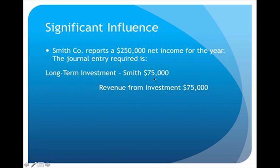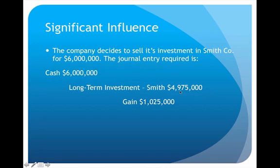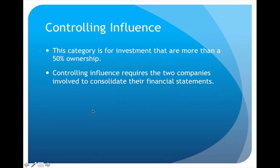Then I reported the net income, which raised the value of the investment by $75,000 — so the current book value is $4,975,000. The difference between the $6,000,000 sale price and the $4,975,000 book value — $1,025,000 — is a gain on the sale of the investment.